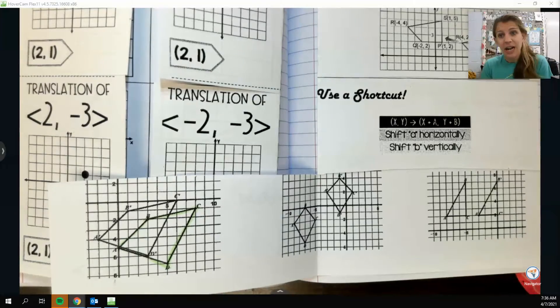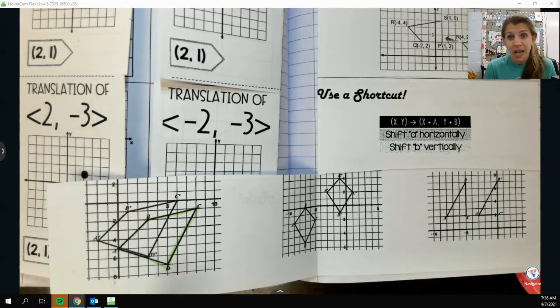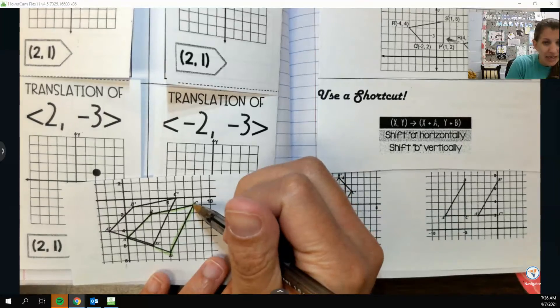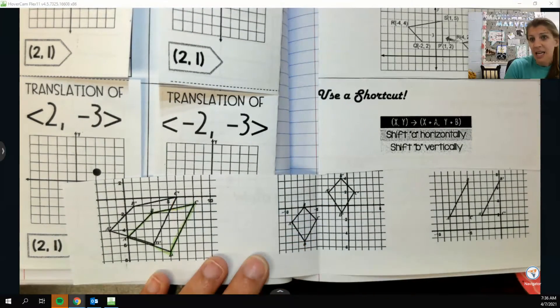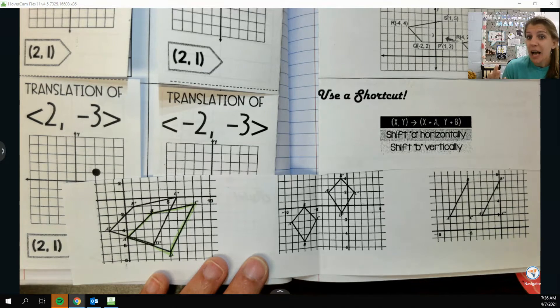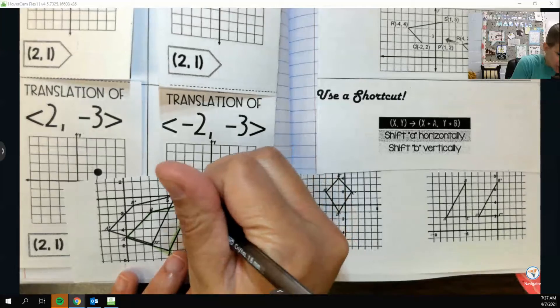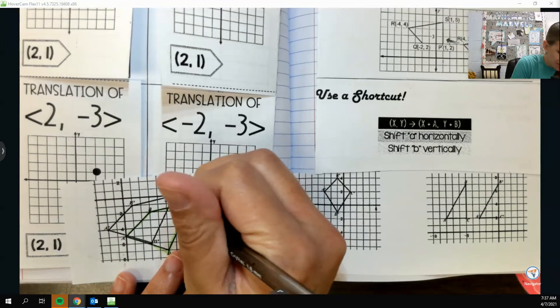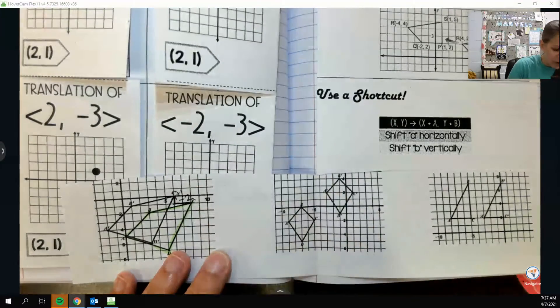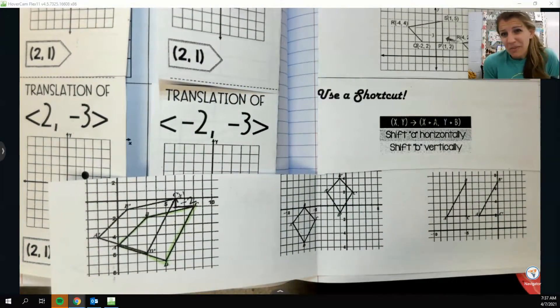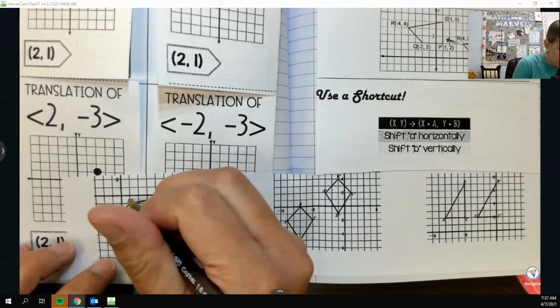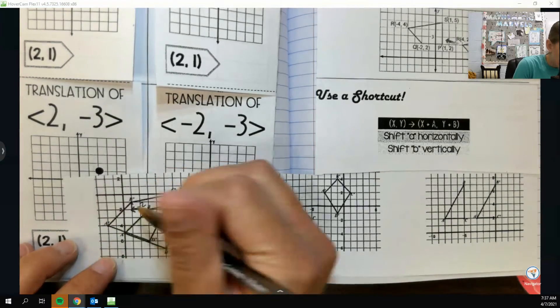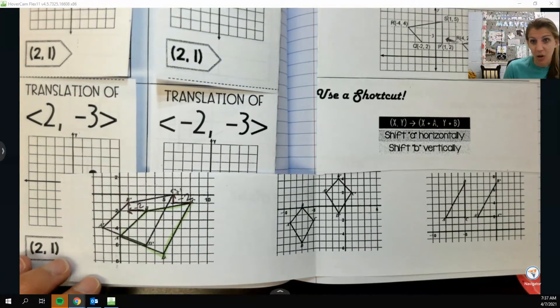To figure out how I go from pre-image to image, I kind of want to just count from point to point. I think that's the easiest way. For me, I noticed C to C seemed pretty easy to count. I want to count in the x direction first. From C to C, I have to go back 1, 2, so negative 2, and it went up 1, so positive 1.